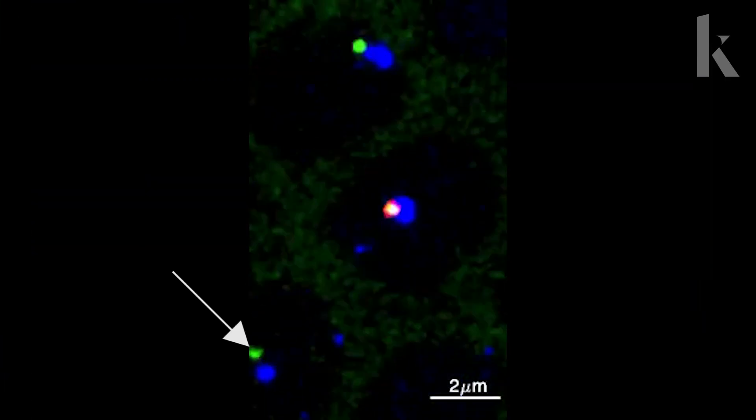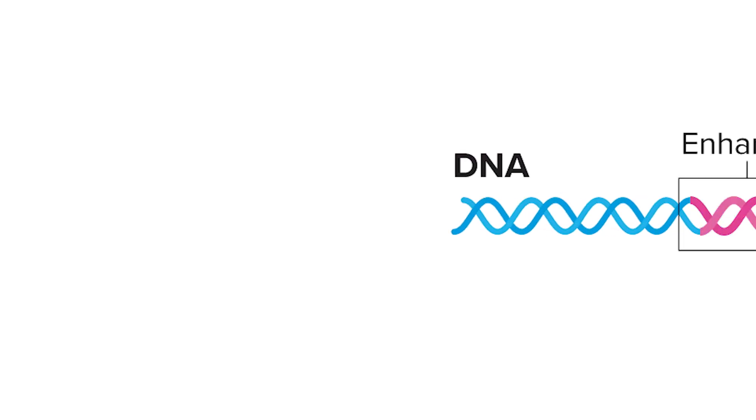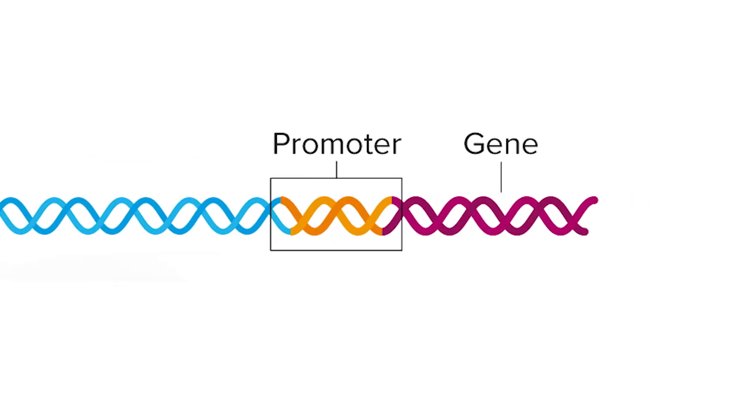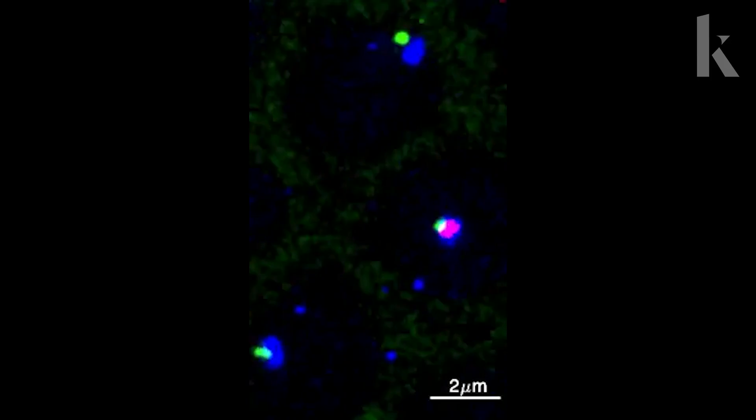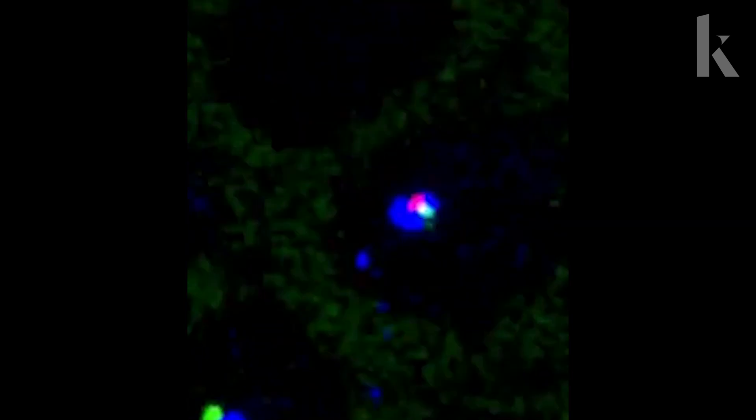Back to our fireworks. The glowing green is a stretch of DNA right next to the gene—it's called a promoter. The blue is a stretch of DNA far away from the gene—it's called an enhancer. To turn a gene on, the promoter and enhancer have to practically touch. And when they do, copies of the gene are made. That's the pink flashes.